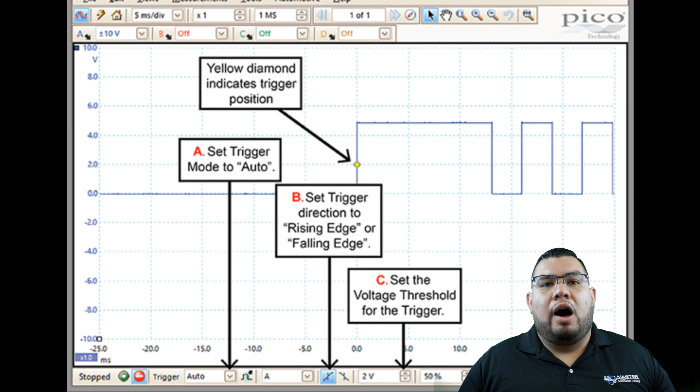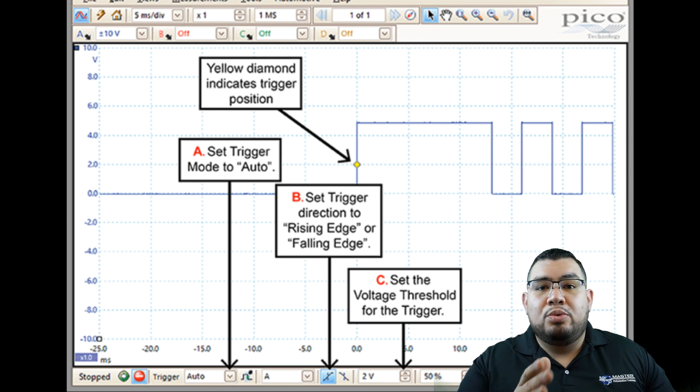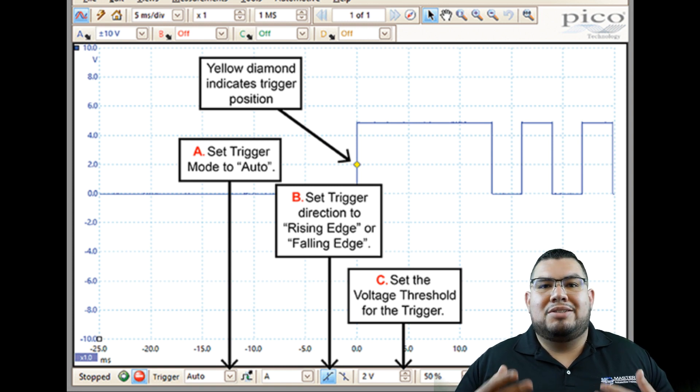The second one would be auto. So the auto function is a function that was introduced or input into your scope by the scope manufacturer. They're going to set it up to how they want to. Remember what I said earlier, lab scopes are you. You run the scope, you set up the scope, it's your preference. I can set it up one way but it might not appeal to you. I'm not a big fan of the auto because the auto function is just preset. I like to do things myself so I usually don't use the auto function. However, if you're just beginning, go ahead and start with that and then you can start working your way into the other ones.